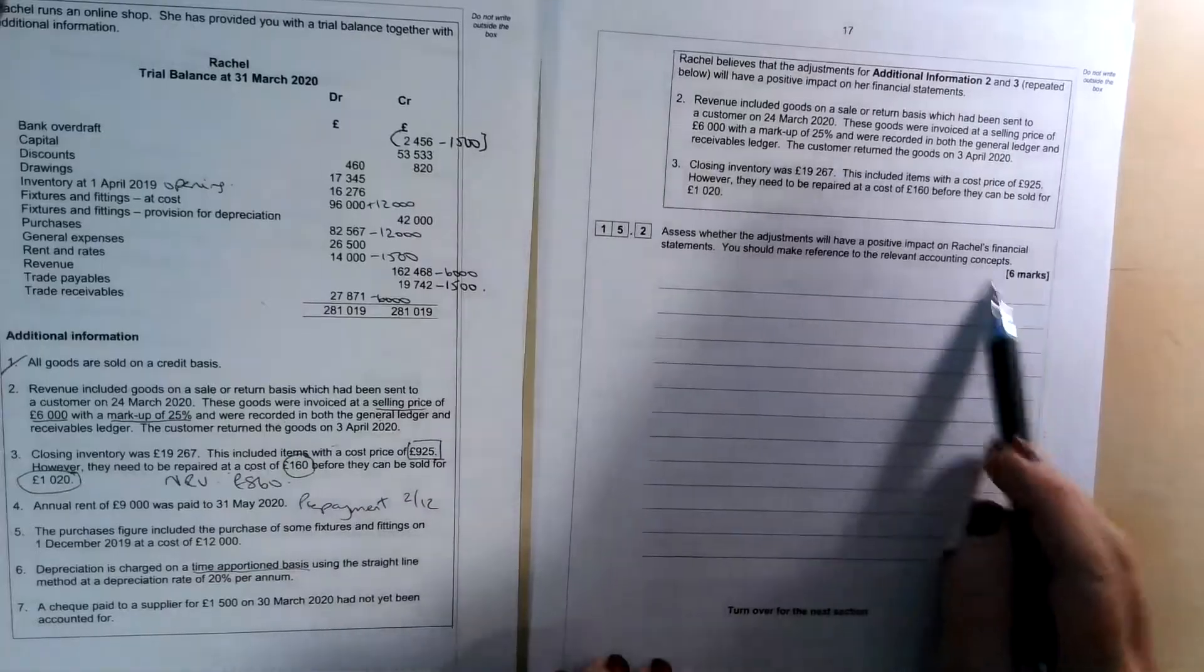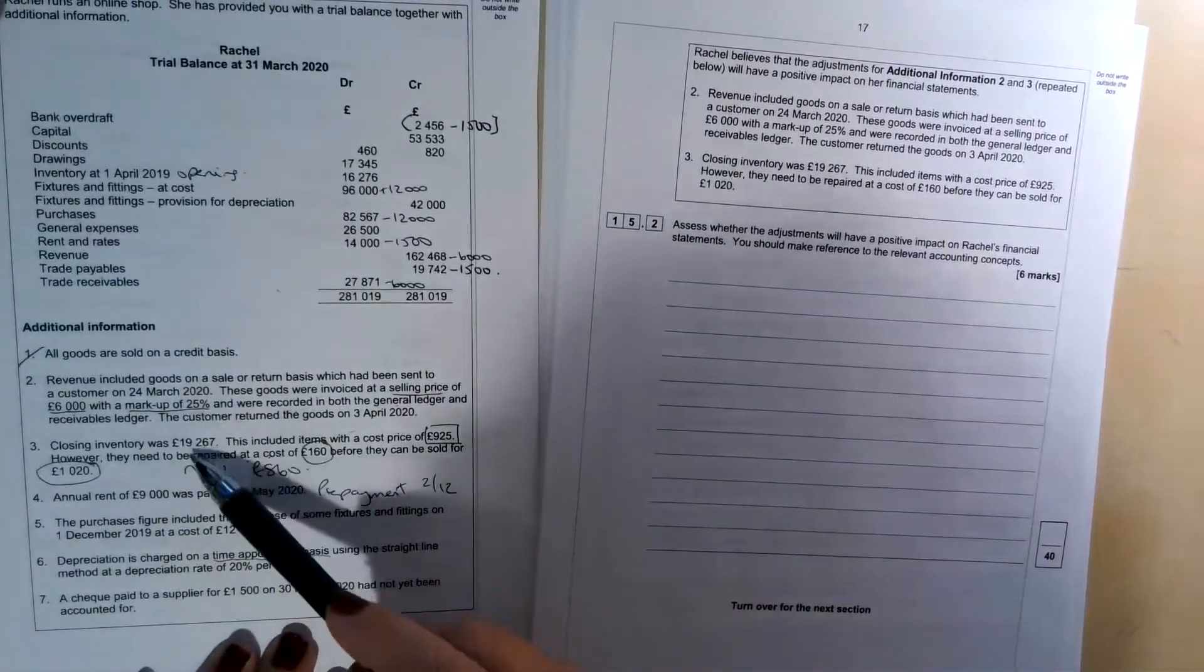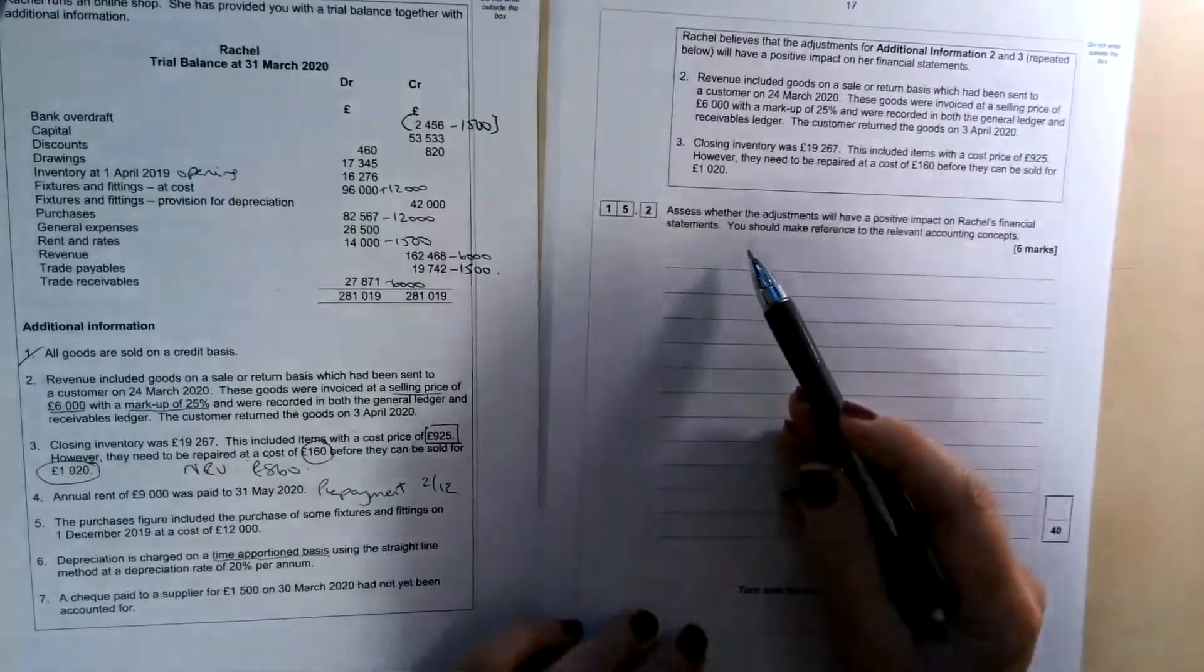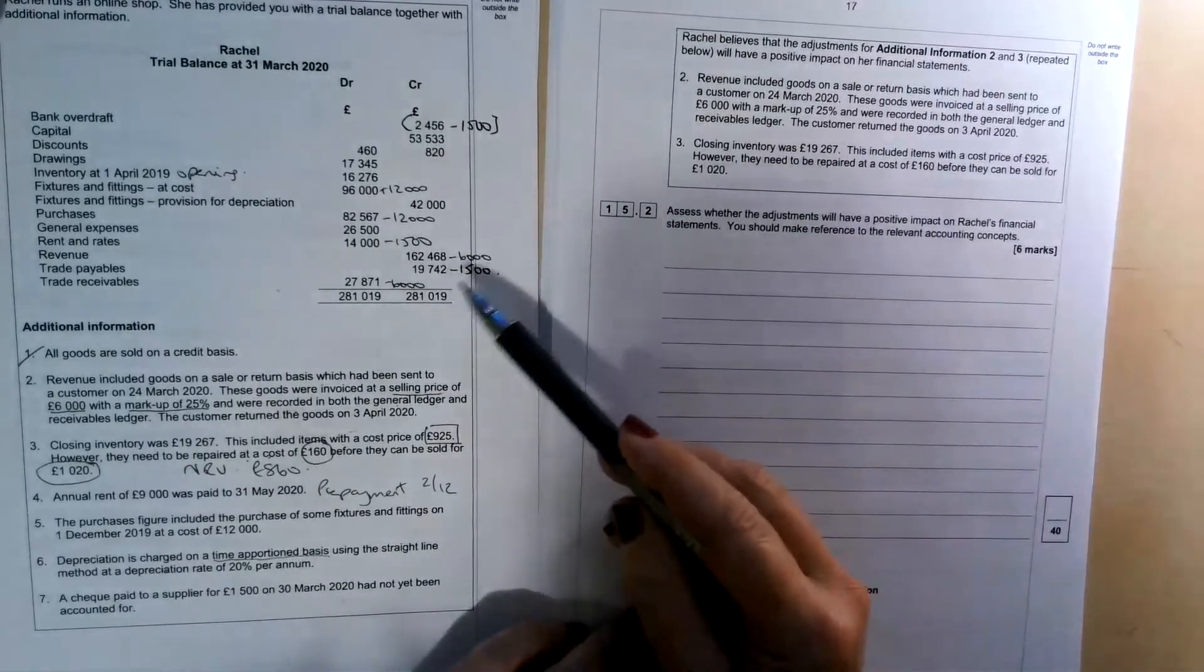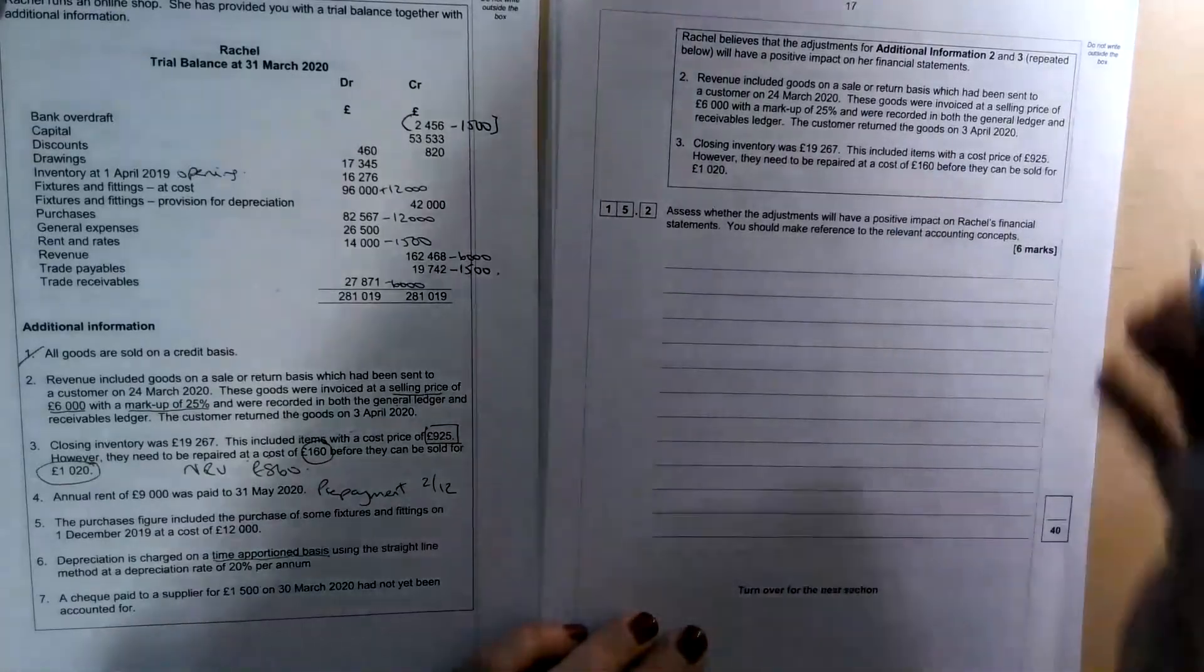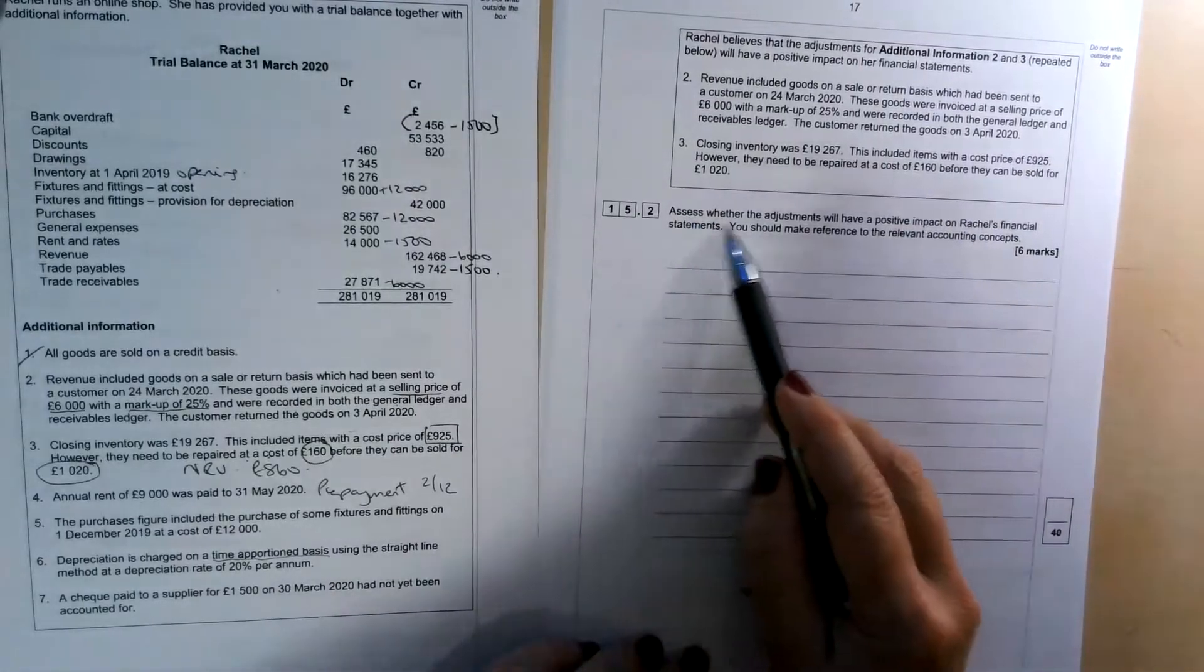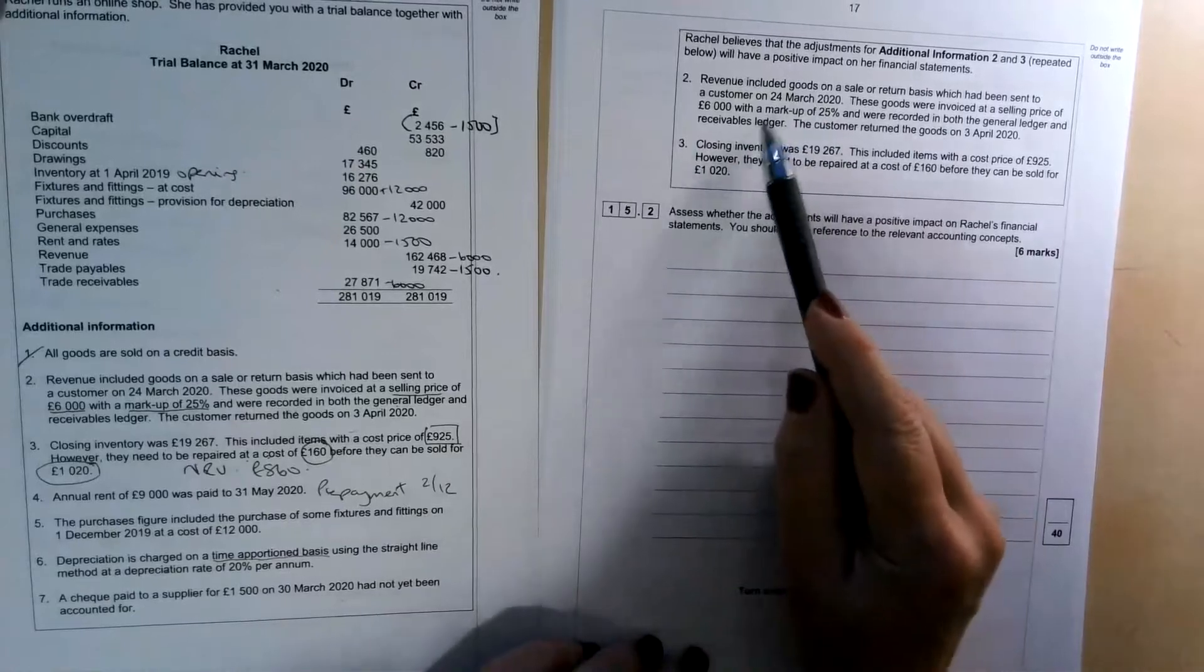So the second part of this question is a little six mark written question. And it says that Rachel believes that the adjustments for additional information number two and three, so number two was the sale or return, and number three was valuing the goods at the lower of cost and net realisable value. She believes that they will have a positive impact on her financial statements. So do we agree with that situation? Well, if we look at the goods on a sale or return basis, we took £6,000 off of sales revenue, which would have reduced the profit. But then we added £4,800 onto closing inventory. So that would have reduced cost of sales and thereby increased the profit. So overall, her profit has gone down as a result of dealing with the sale or return by £1,200. So whether we think that's a positive impact, I'm not entirely sure, she's reduced the profit by £1,200. Now, it's asking us to assess whether the adjustments will have a positive impact, but also to make reference to the relevant accounting concepts.